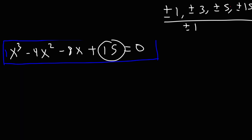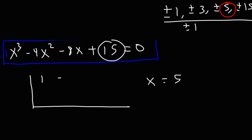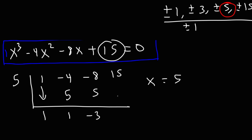Let's try 5 and see if that's going to work. The coefficients are 1, negative 4, negative 8, 15 with 5 on the outside. 1 times 5 is 5; negative 4 plus 5 is 1; 5 times 1 is 5; negative 8 plus 5 is negative 3; 5 times negative 3 is negative 15; and we do get a 0, which means that x equals 5 is a solution.